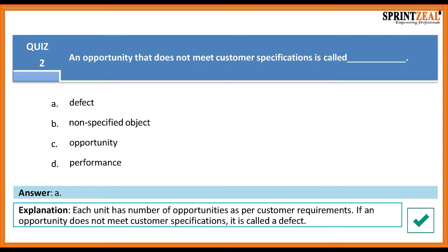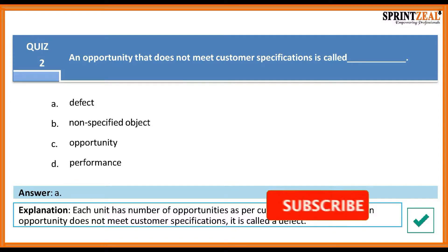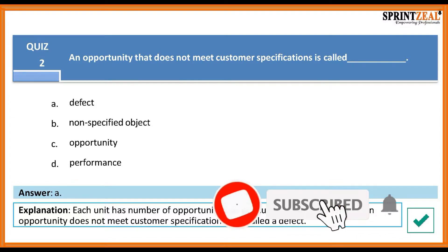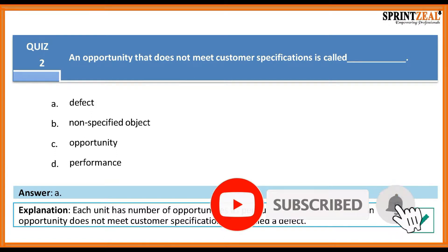The answer is A. Each unit has a number of opportunities as per customer requirements. If an opportunity does not meet customer specifications, it is called a defect.